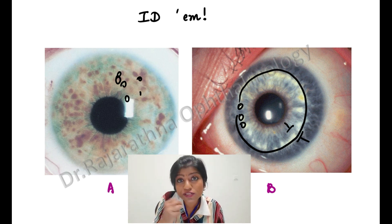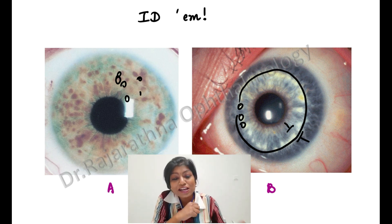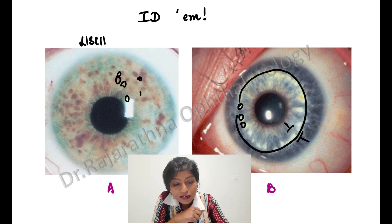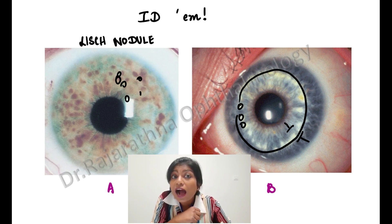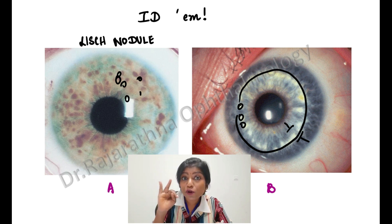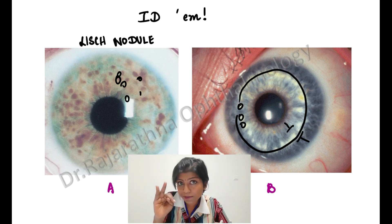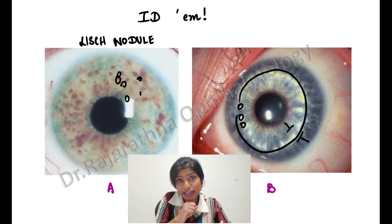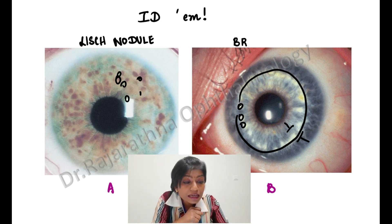So what is A? A is Lisch nodules. What are Lisch nodules? These are iris hamartomas — a proliferation of the pigmented iris epithelium, scattered all around. They are seen in neurofibromatosis type 1.